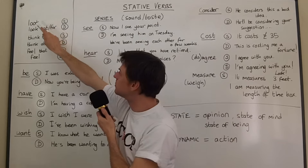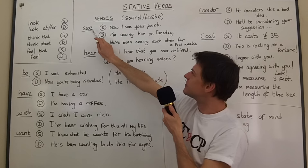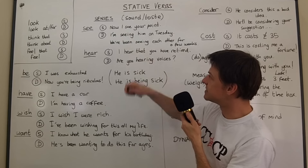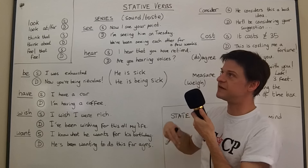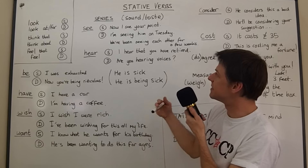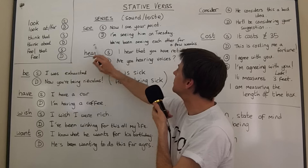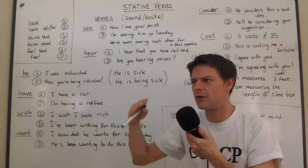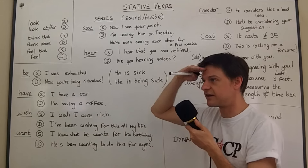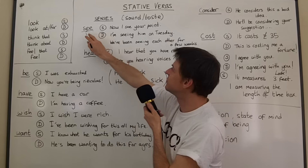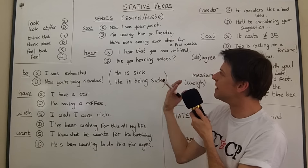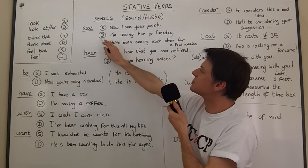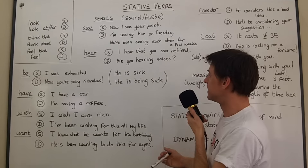With verbs of the senses like 'see,' if the verb is being used as an action, it's often used in continuous, in a dynamic sense. But if it expresses a state of being, it's used in simple form. 'Now I see your point' or 'I see him coming' — you can't say 'I am seeing him coming.' So that would be 'see' used to express a state, something that's necessarily true. If we use 'see' dynamically, it often changes its meaning.